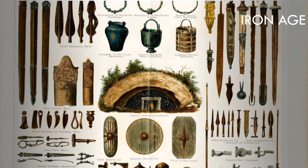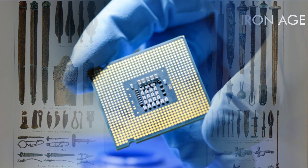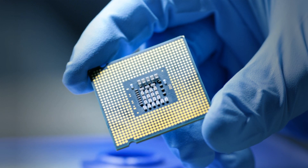Many years have passed since the Iron Age, but we are still using minerals from the earth to advance human technology. As of modern day, minerals such as cobalt, lithium, copper, iron, silicon, and aluminum are all essential components in electronic chips, computers, and batteries.